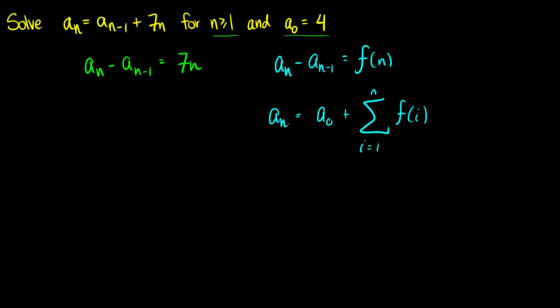So how do we do this? Well in this case we have an. What is a0? So a0 is equal to 4. So this is 4 plus and then we have the sum from i equals 1 to n of f of i. So what is our f of n? Well our f of n is 7n. So our sum is going to be 7i.